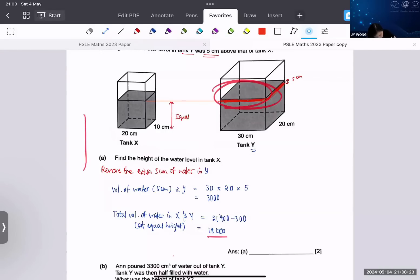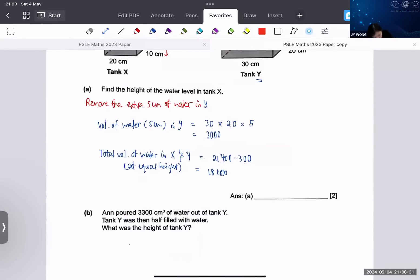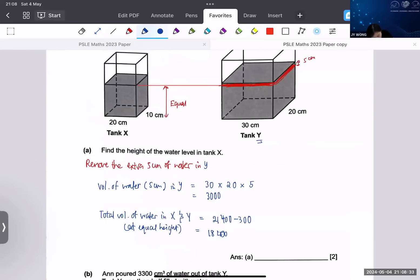Without that red color part, the volume of water is 18,400. Remember what I mentioned about this concept - it is combined base area. What happens when we need to solve such question is because the height is the same, we combine the base area.